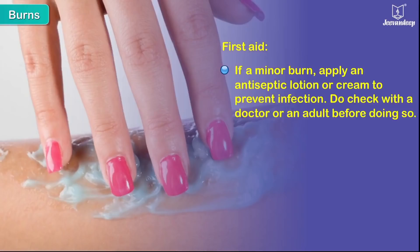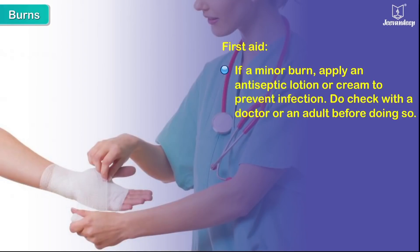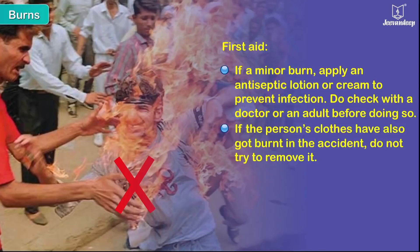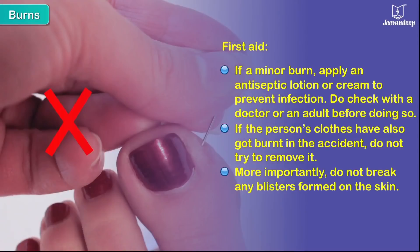If a minor burn, apply an antiseptic lotion or cream to prevent infection. Do check with a doctor or an adult before doing so. If the person's clothes have also got burned in the accident, do not try to remove them. More importantly, do not break any blisters formed on the skin.